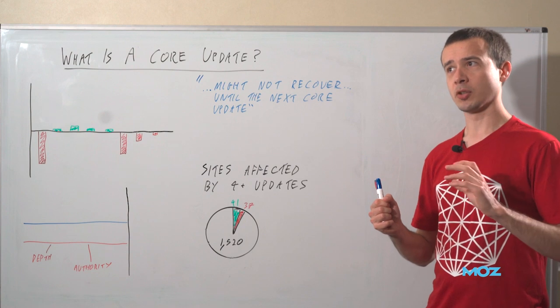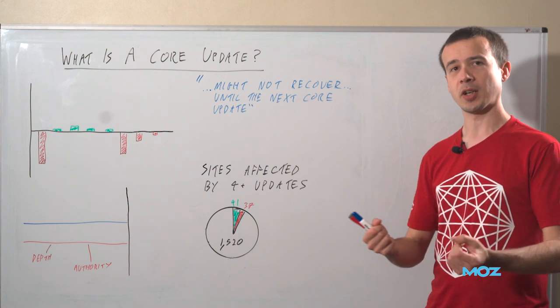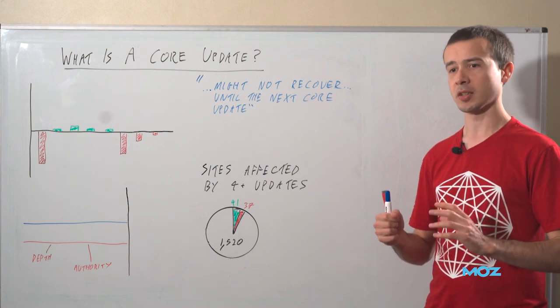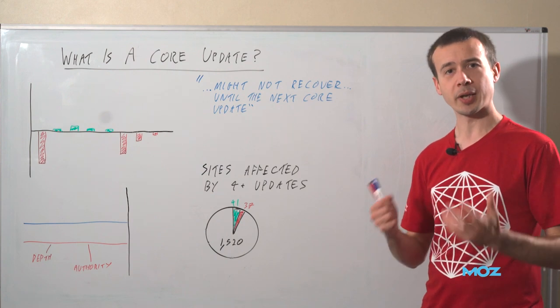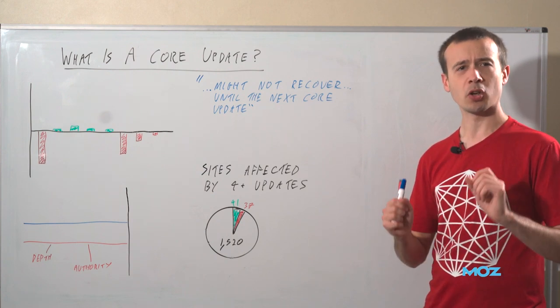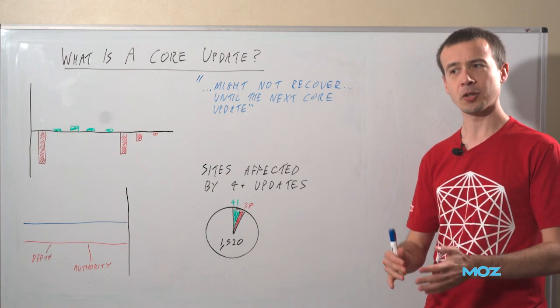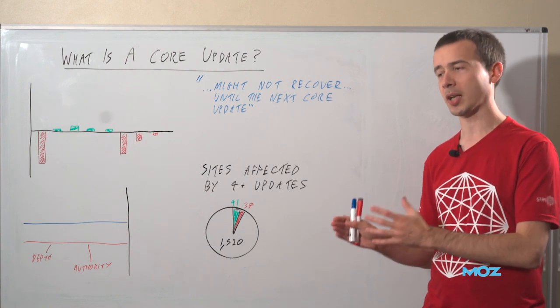It's interesting that sometimes Google talks about updates very specifically. So I think the best examples are things like HTTPS or Core Web Vitals, Page Experience Update, where they're very concrete about what they're going to do, how they're going to do it, how they're going to measure it, how it's going to impact the algorithm.